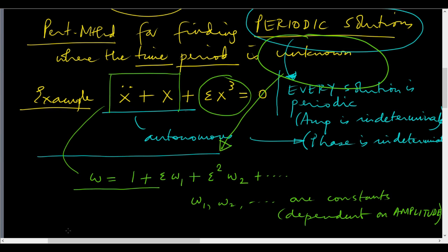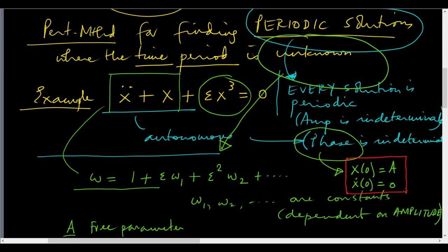We are going to allow this in ways that will be clear soon and that accounts for the unknown periodic solution. The amplitude A is a free parameter. The phase is indeterminate and so we will start with the solution x of 0 equals A, x dot of 0 equals 0.